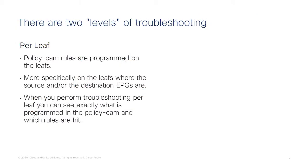We can think of troubleshooting for contracts as two different options. One is to troubleshoot per leaf — knowing that the policy cam rules are programmed per leaf, you go into the leaf or leaves where the EPGs are present and check the policy cam rules there, leaf by leaf. You can also check which rules are hit, and there are hardware counters for each rule that are on by default and updated continuously.